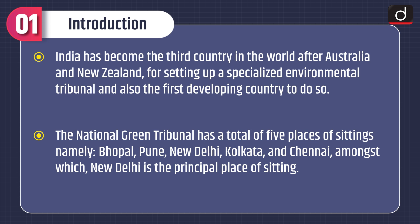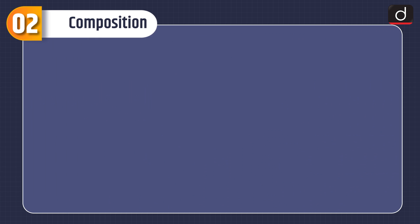The National Green Tribunal has a total of five places of sittings, namely Bhopal, Pune, New Delhi, Kolkata and Chennai, amongst which New Delhi is the principal place of sitting.